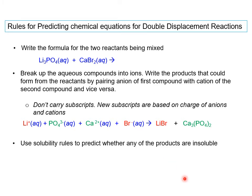Next, we use the solubility rules to predict whether or not any of our products are insoluble. We're going to look up the solubility chart to see if lithium bromide is aqueous or if calcium phosphate is aqueous.